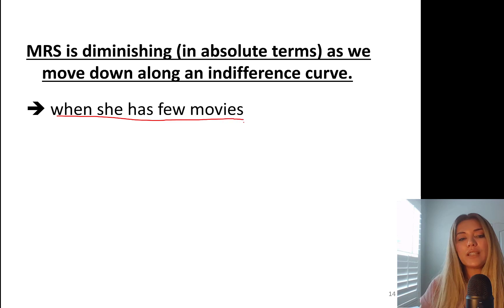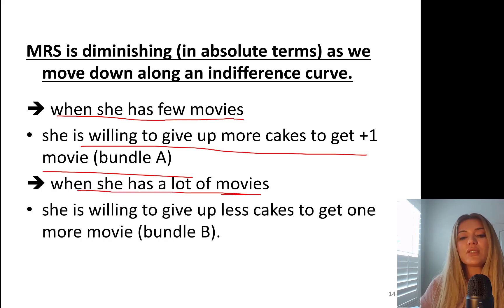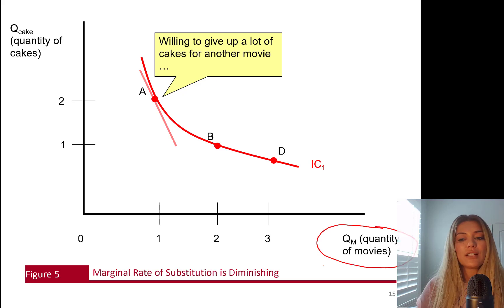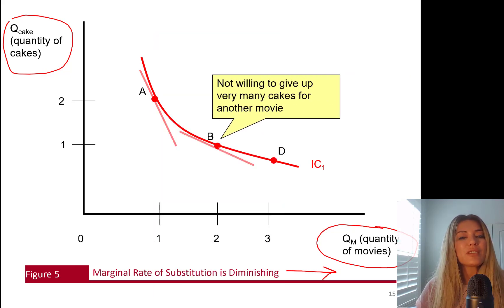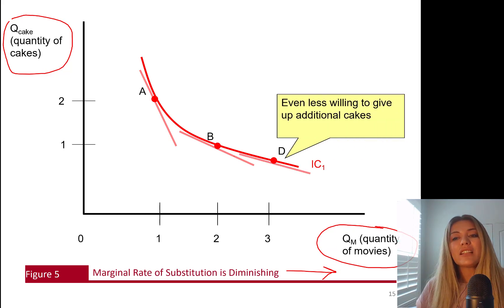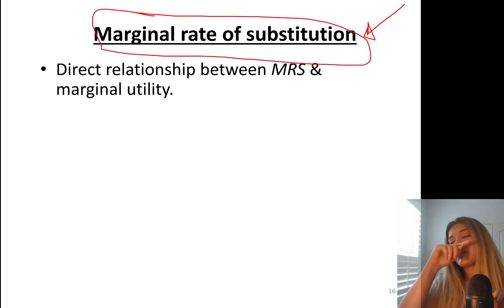So when she has few movies, she's willing to give up more cakes to get one more movie — bundle A. When she has a lot of movies already at point B, she's willing to give up fewer cakes to get one more movie. At point D, she's even less willing to give up additional cakes. Marginal rate of substitution tells you how many of whatever you have on the Y-axis you are willing to give up to get one more unit of what you have on the X-axis, and it's diminishing.